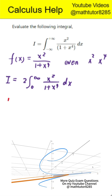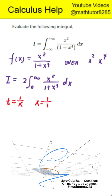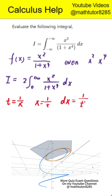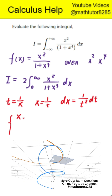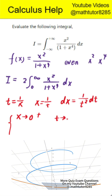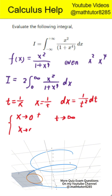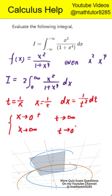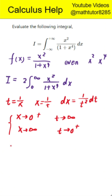The next step is substitution to simplify. We set t equal to 1 over x. Then x equals 1 over t, and dx equals negative 1 over t squared times dt. When x approaches 0 from the positive side, t approaches infinity. When x approaches infinity, t approaches 0 from the positive side.